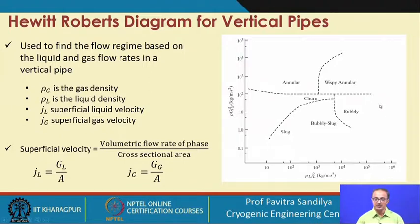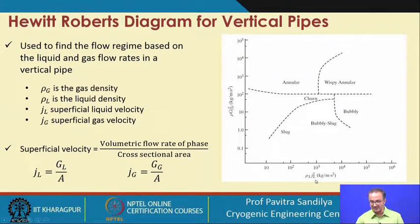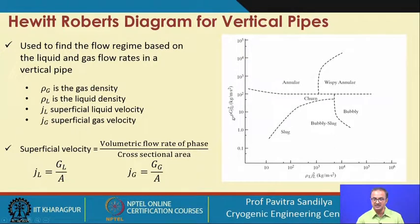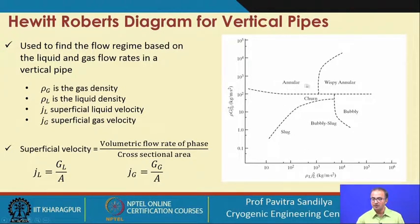Here we have a flow regime diagram for vertical flow that tells us what kind of flow regimes we can have. On the x-axis we have some kind of ρ_L and j_L factor, where j_L is given in terms of the gas flow rate and the area of cross section. All these parameters are used to find out what kind of flow we shall be obtaining in two-phase flow in a vertical pipeline.